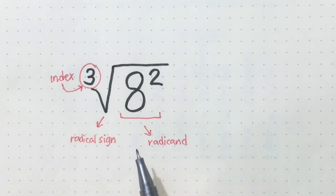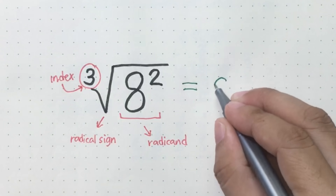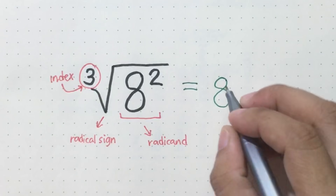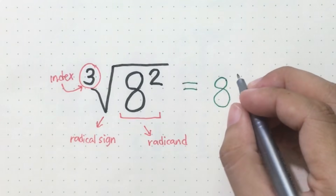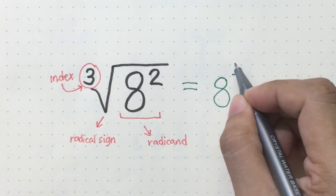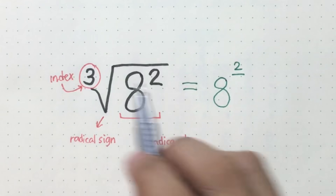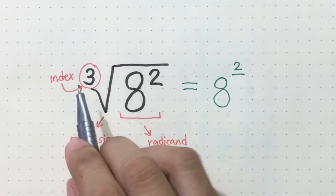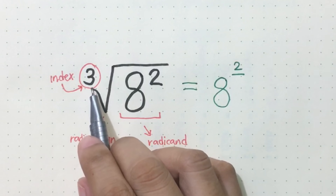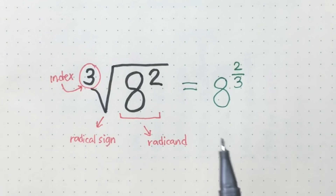This radical expression can be written as a power with a rational exponent. In that case, the radicand will be the base. The exponent of the radicand will be the numerator of the rational exponent, and the denominator will come from the index. The index of this radical expression is three, so the denominator will be three. So this radical expression can be written as eight raised to two-thirds.